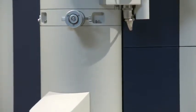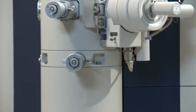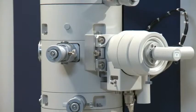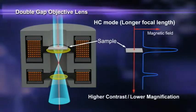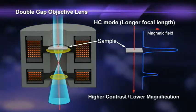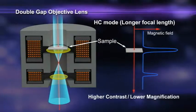The HT7700 is equipped with Hitachi's double-gap objective lens, which has earned a good reputation in the 120-kilovolt TEM market. Its basic performance of low magnification and wide field of view and high contrast and high-resolution observation have been passed on to the HT7700.